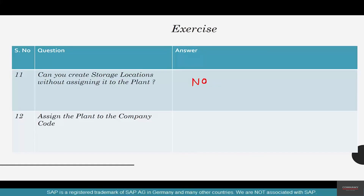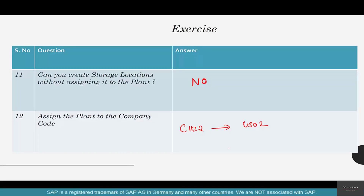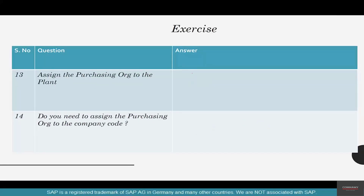Assign the plant to the company code — so assign the plant CHI2 that you created to the company code US02. Refer back to the video if you have questions on how to do it. Assign the purchase org to the plant — purchase org US02 is going to be assigned to the plant CHI2. Do you need to assign a purchase org to the company code? Not necessarily.